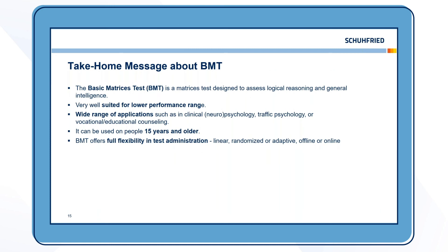To summarize: the BMT is a matrices test for measuring reasoning and general intelligence. It was developed specifically for the lower performance range and therefore can very well differentiate within this range. As a matrices test it can be used in a wide range of fields of application, and it can currently be used from age 15 and older. With BMT you have a very flexible tool at hand — be it linear, randomized, or adaptive test presentation, offline or online, standard or test supervisor-supported instructions. Everything is possible with BMT.